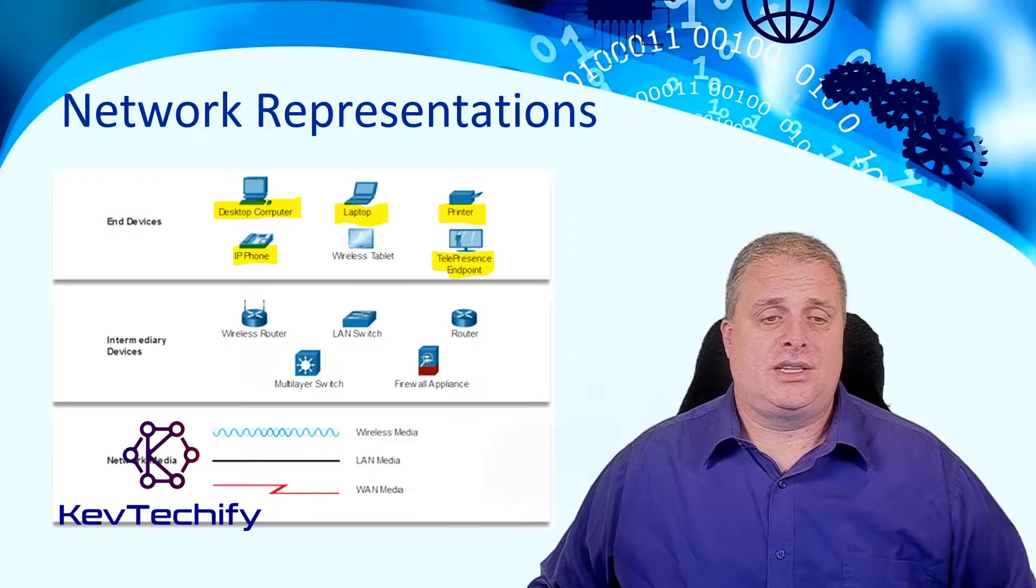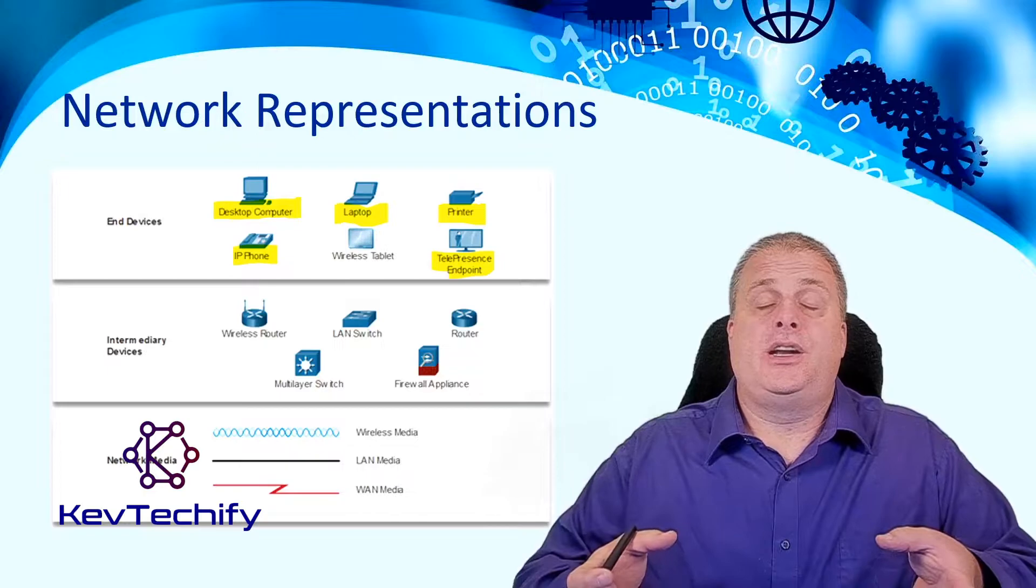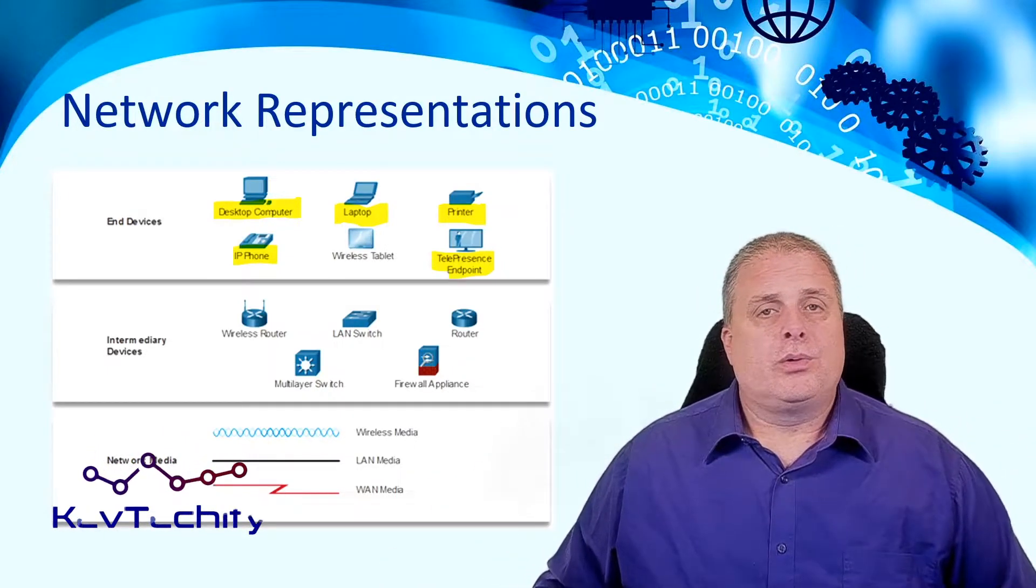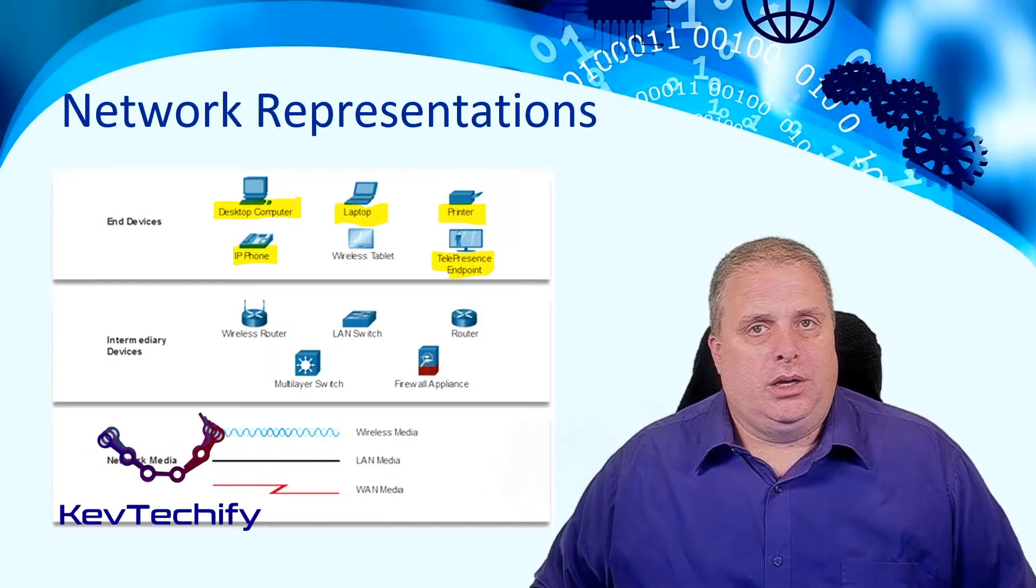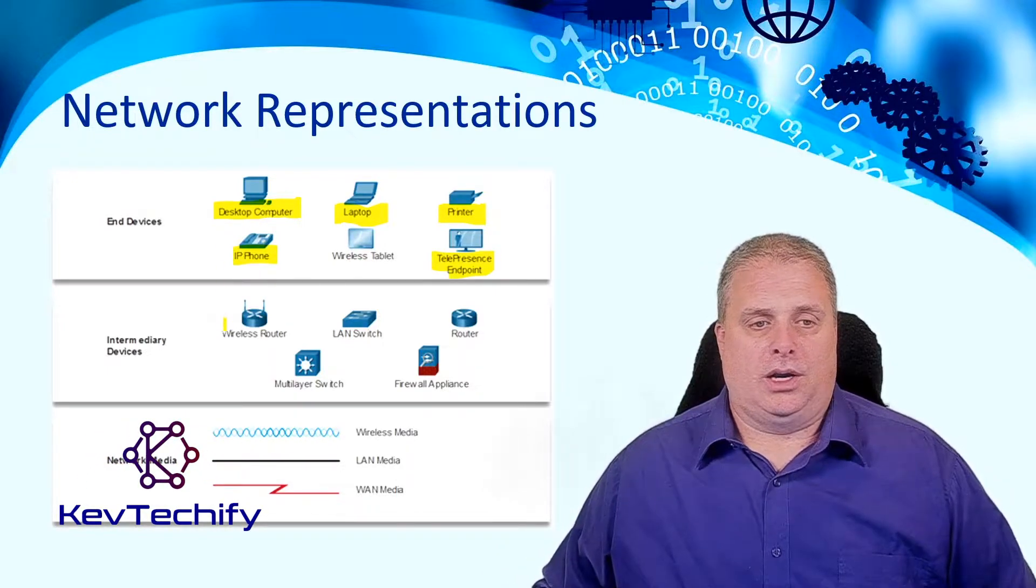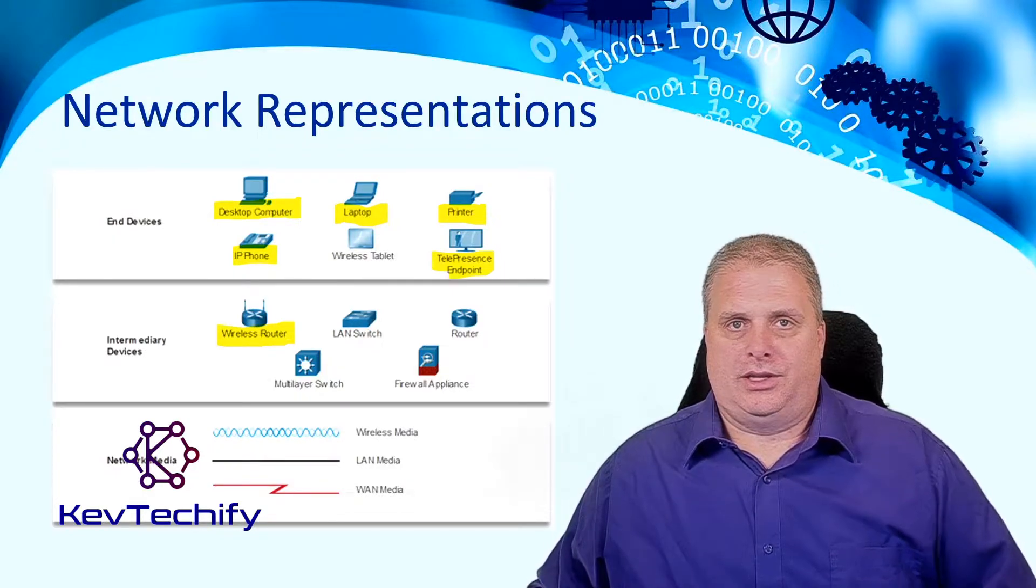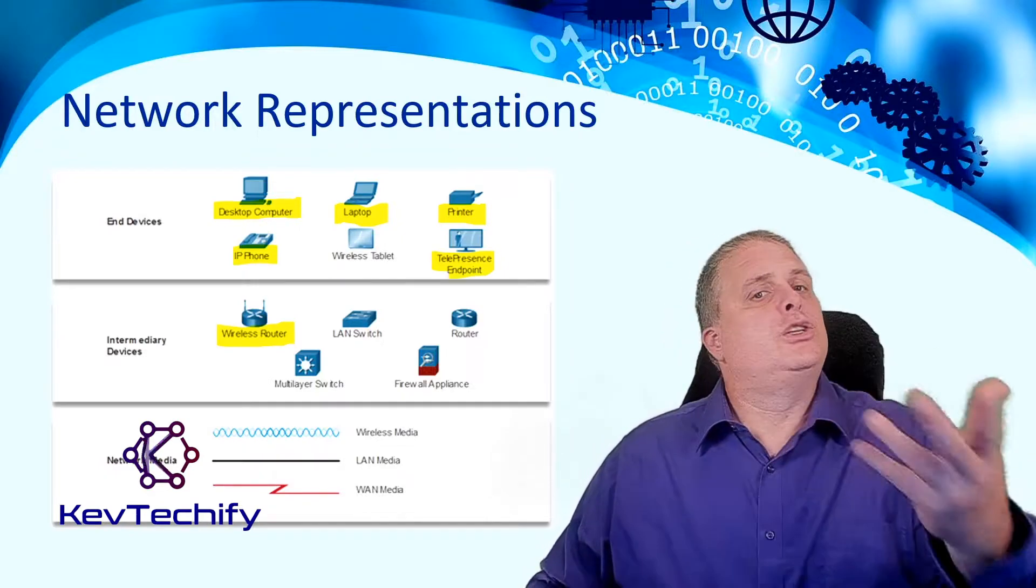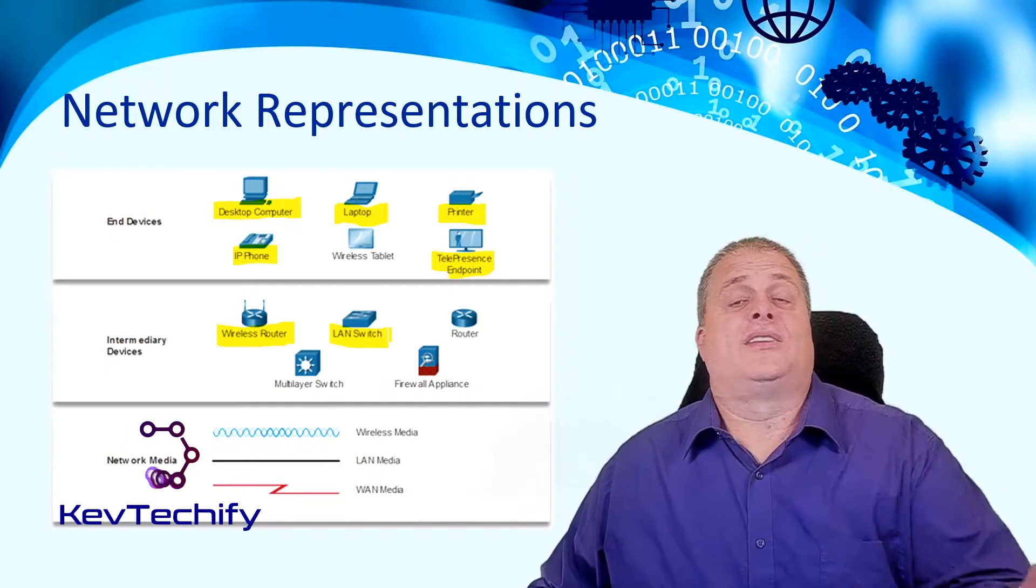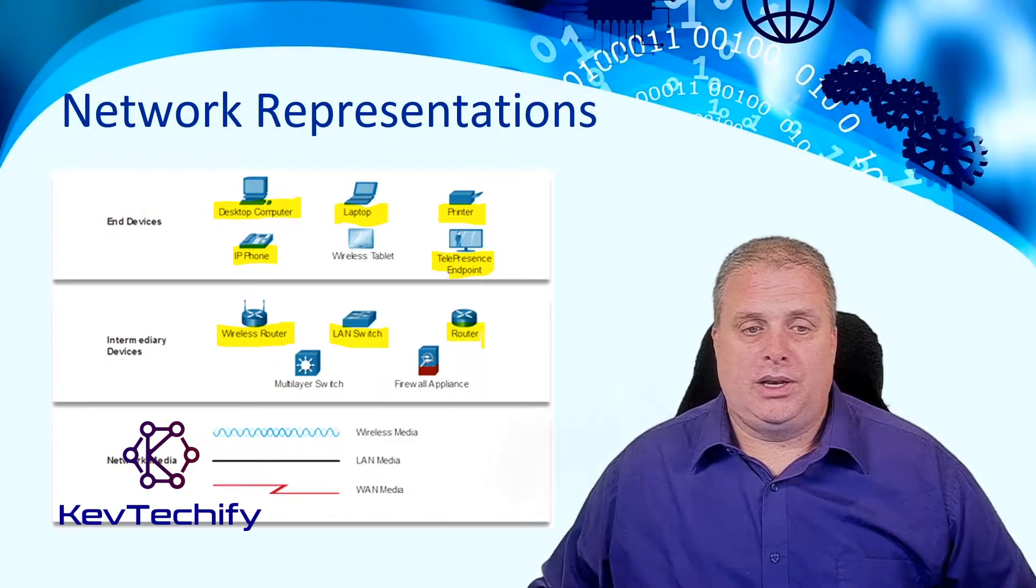Intermediary devices, end devices is where data starts and stops. Intermediary devices is where data goes through. We do have some of these. You will probably have to commit these to memory as we get into it. But, this is our wireless router here. You can think of this as an access point. It turns the signal from a wired connection into a wireless connection. LAN switches, we use on our local area network to connect up lots and lots of devices to it. We also have a router here. Routes between networks.